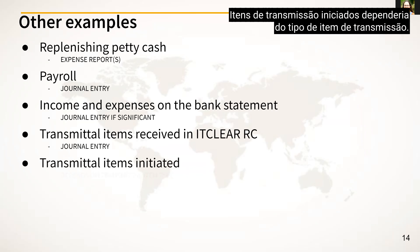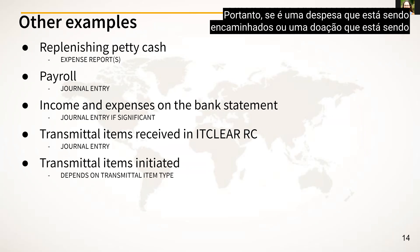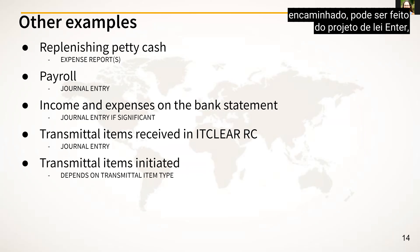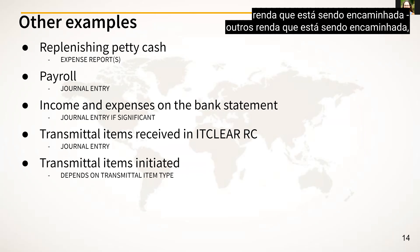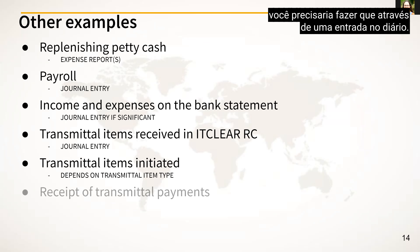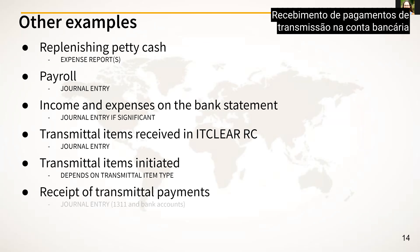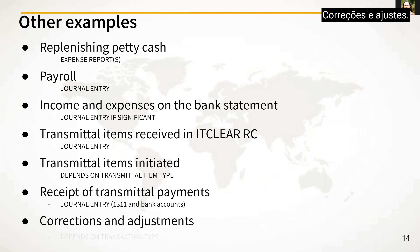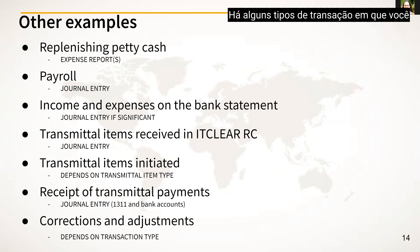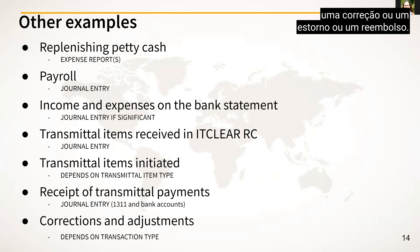Transmittal items initiated would depend on the transmittal item type. If it is an expense or a donation being forwarded, it can be done from the enter bill, expense report, or donation cash sale screen. If it is a subsidy or other income being forwarded, you would need to do that via a journal entry. Receipt of transmittal payments into the bank account should be done via a journal entry that mirrors the receipt of cash — a transfer from account 1311 to your bank account. For corrections and adjustments, it depends on the transaction type. Some screens allow a correction, reversal, or refund with one button; others require a journal entry.